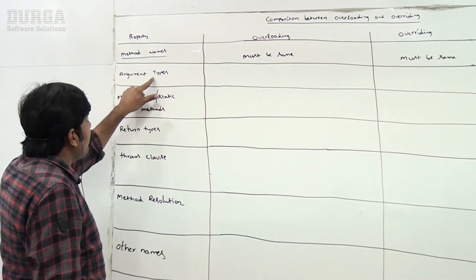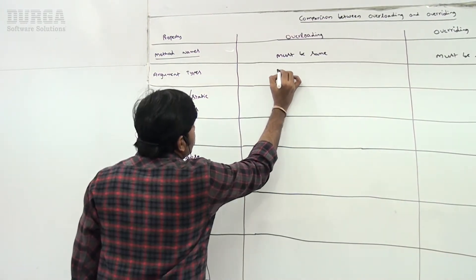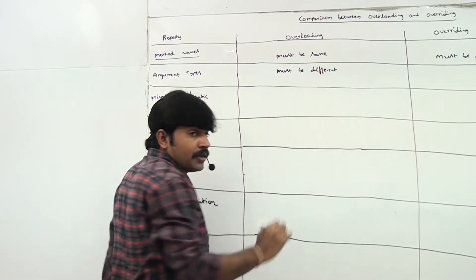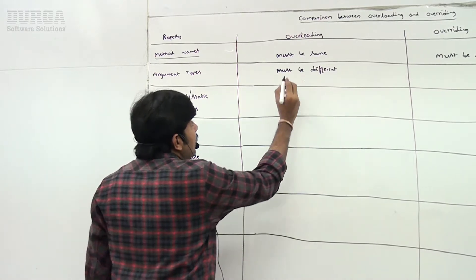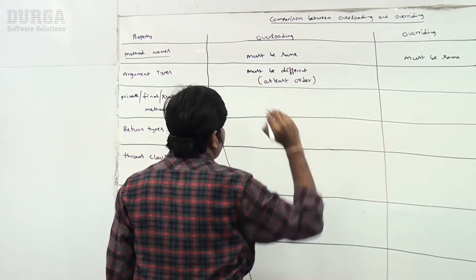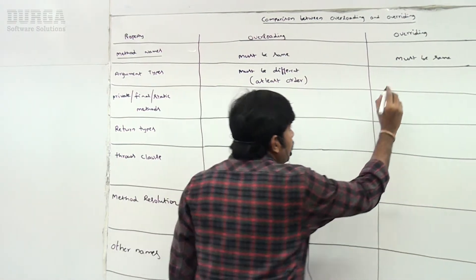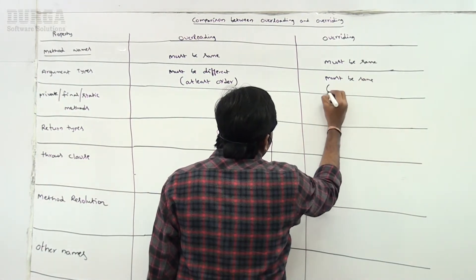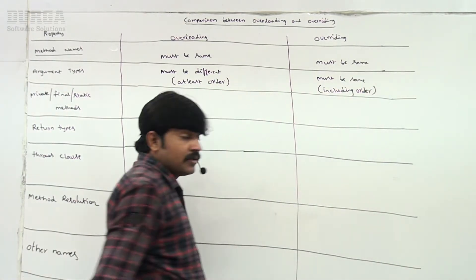The second point is argument types. In overloading, argument types must be different — at least the order must differ. But in overriding, argument types must be same, including the order. That is compulsory.